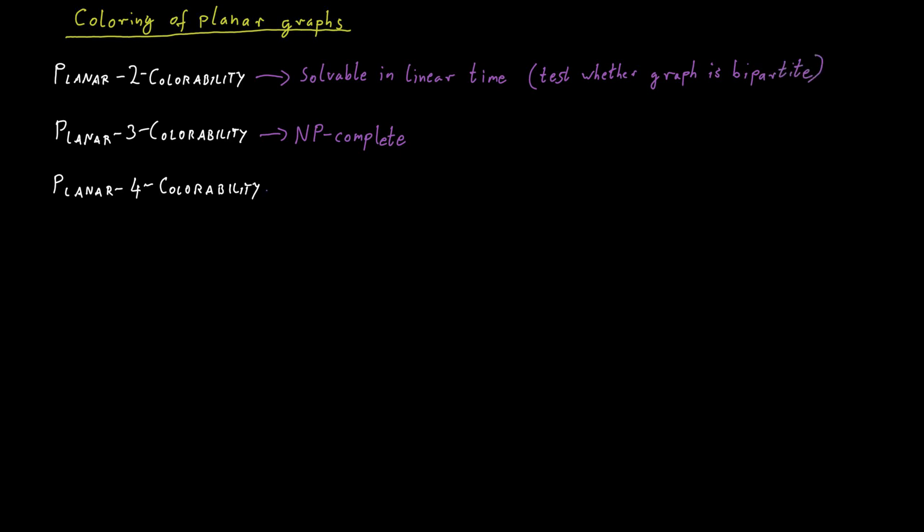Planar four coloring, is that an easy or difficult problem? So planar two coloring was relatively easy. Planar three coloring was NP complete, so it's not so easy. Planar four coloring is even easier than planar two coloring. It is solvable in constant time. In fact, I don't even need to look at the input to answer the question.